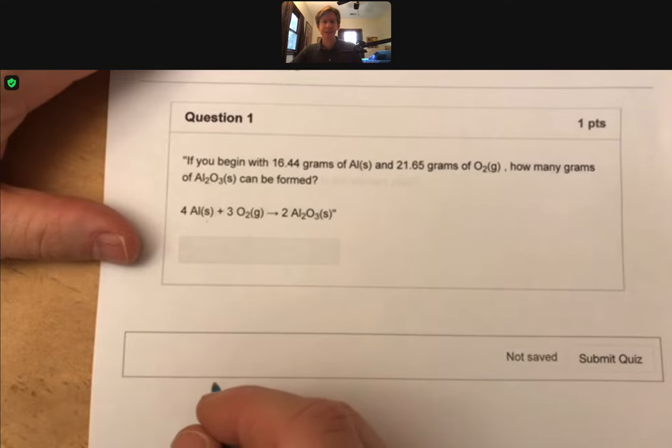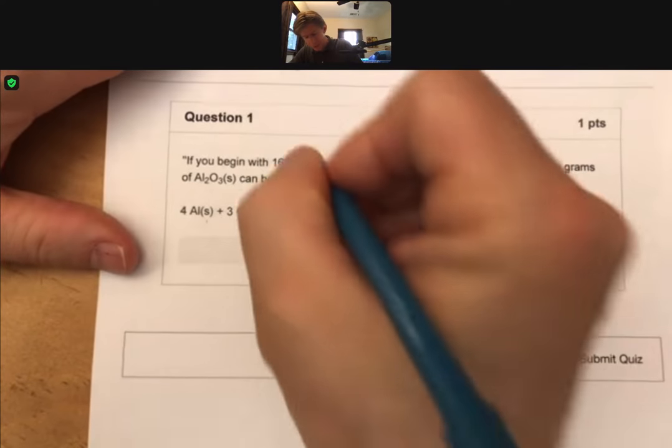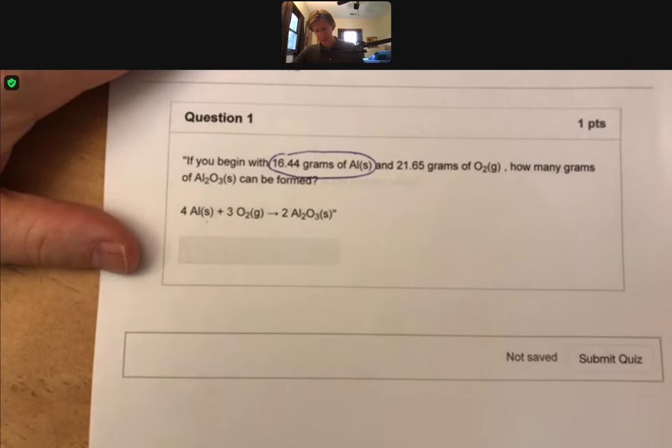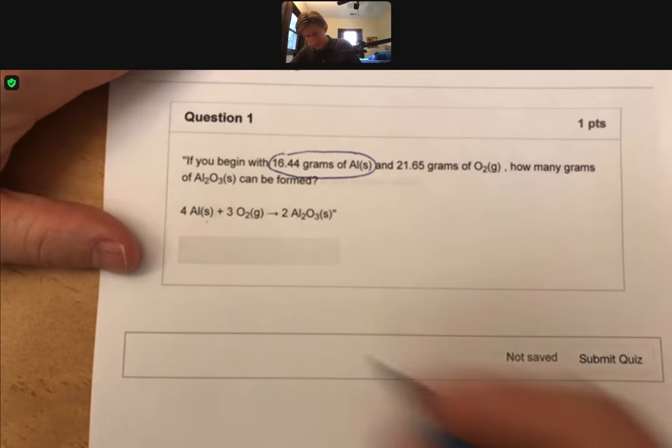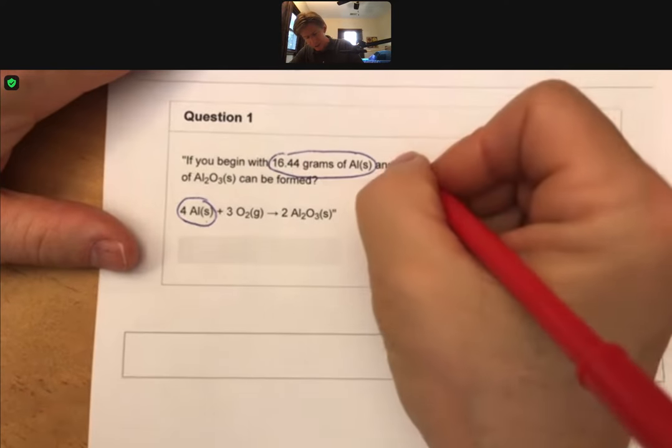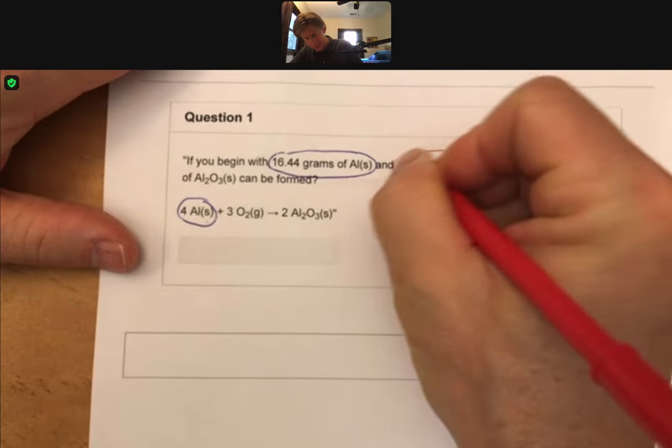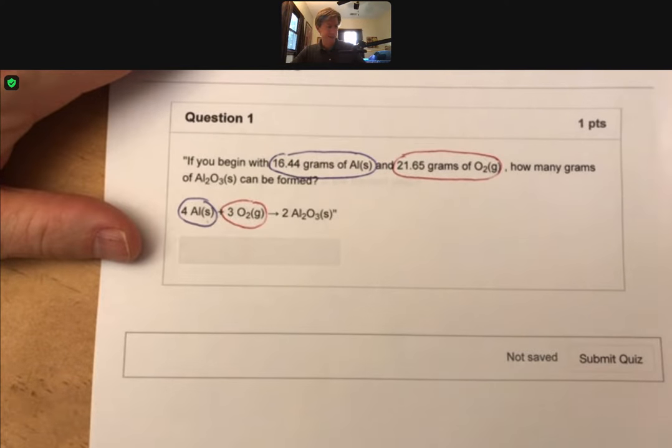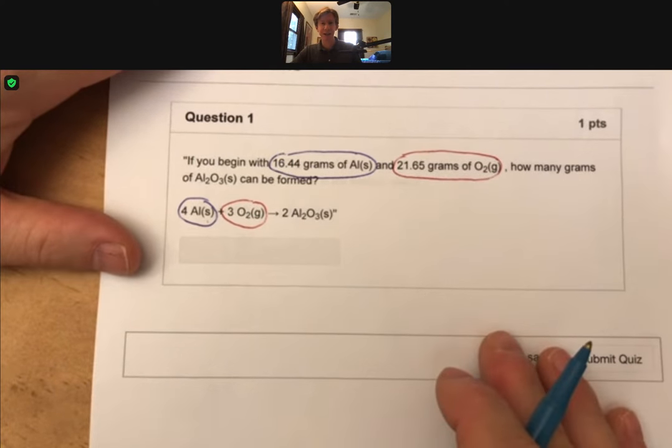This is a definite limiting reactant problem. You can tell a limiting reactant problem because there are grams or an amount of one of the reactants, and there are grams or another way to tell an amount of the other reactant. Let's try and color code this again.